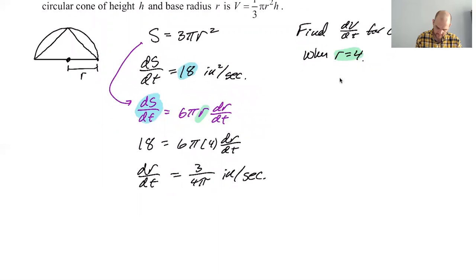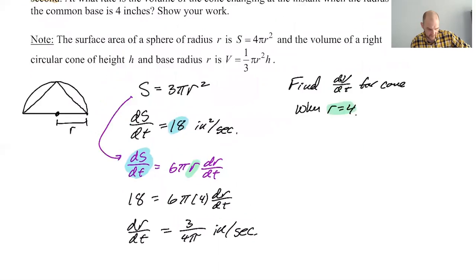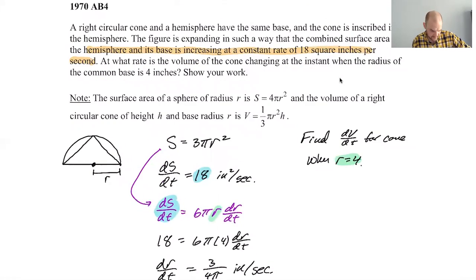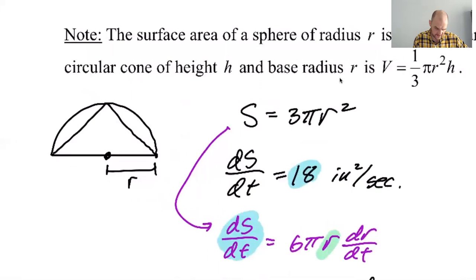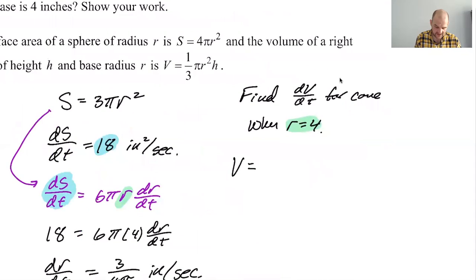Okay, now because the cone is inside the hemisphere, the height of the cone is also the radius. So I'm going to add that into the picture - this is also the radius. The volume of the cone would be (1/3)πr²h, but instead it's going to be (1/3)πr³ because h equals r.